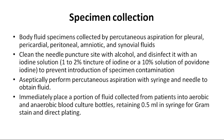Now let's look at specimen collection. For body fluid specimens, collection can be done by percutaneous aspiration for pleural, pericardial, peritoneal, amniotic, or synovial fluid. First, the site is cleaned and disinfected using 1-2% tincture iodine or 10% povidone-iodine solution, to prevent any introduction of contaminants into the specimen. After thoroughly disinfecting the site, aseptic percutaneous aspiration with a syringe and needle is done to obtain the sterile fluid.